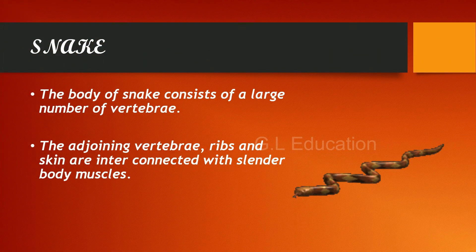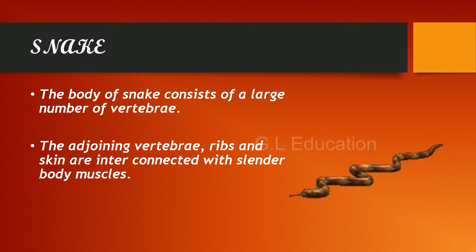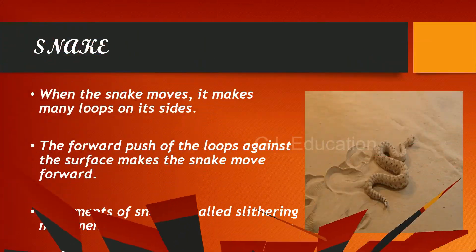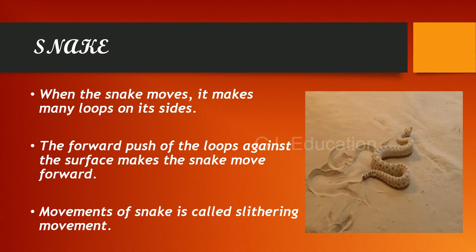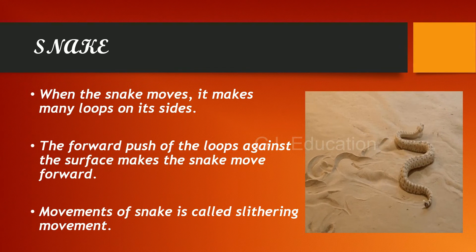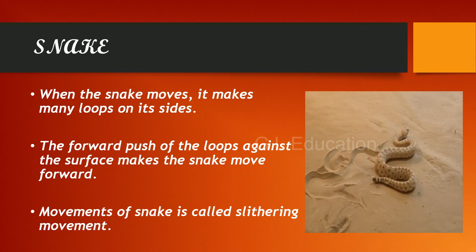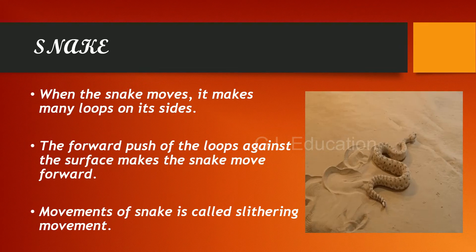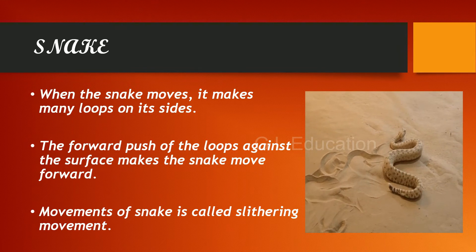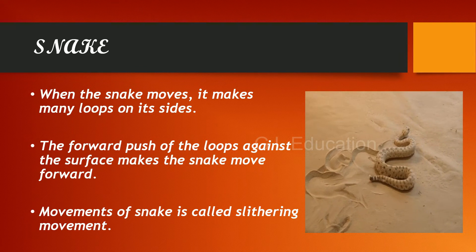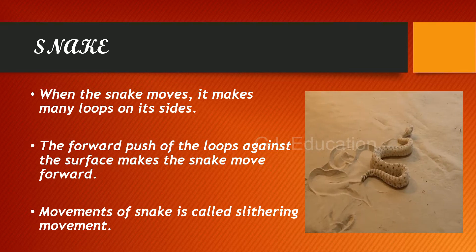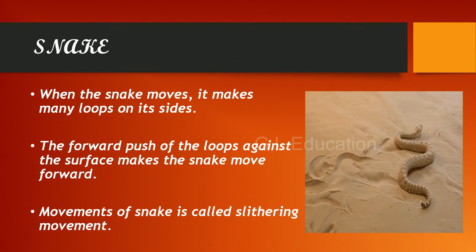Snake. The body of a snake consists of a large number of vertebrae. The adjoining vertebrae, ribs and skin are interconnected with slender body muscles. When the snake moves, it makes many loops on its sides. The forward push of the loops against the surface makes the snake move forward. This movement is called slithering.